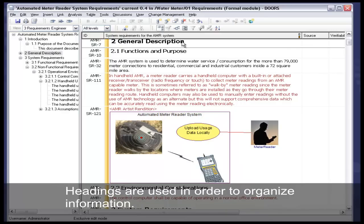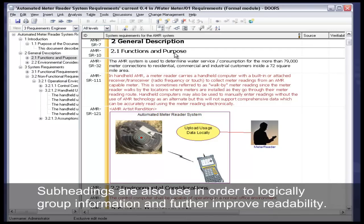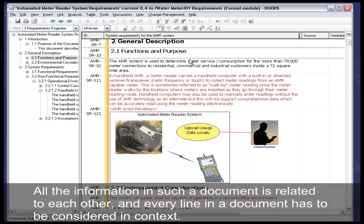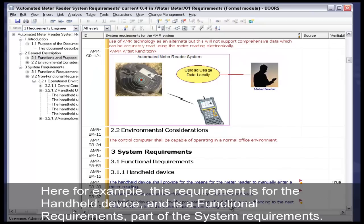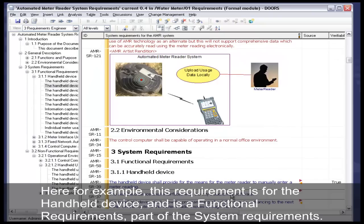Headings are used in order to organize information. Subheadings are also used to logically group information and further improve readability. All the information in such a document is related to each other, and every line in the document has to be considered in context. Here, for example, this requirement is for the handheld device and is a functional requirement, part of the system requirements.